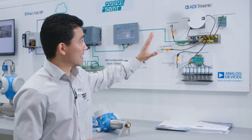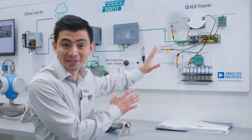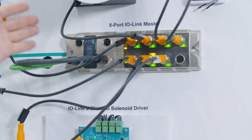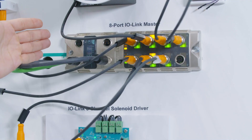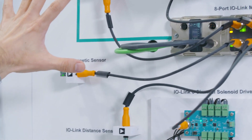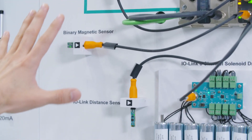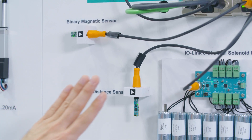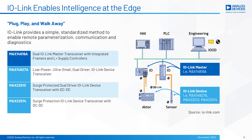On this side of the demo we have our IO-Link technology, starting with an 8-port IO-Link gateway connected through Ethernet and also connected through IO-Link to several sensors and actuators. Some of the advantages that IO-Link brings is that it is plug-and-play, configurable, and also capable of sending diagnostic information about the sensor on top of the sensor data.